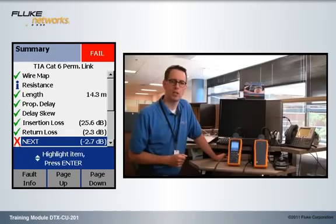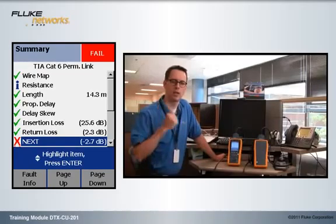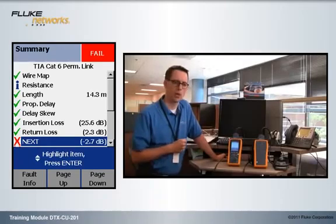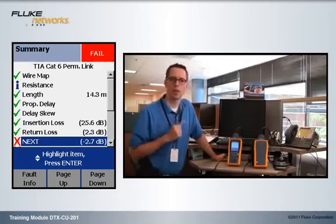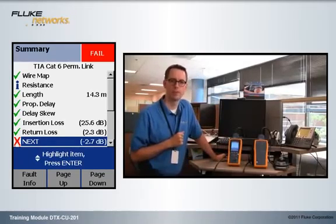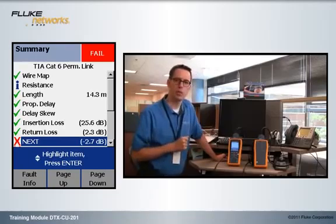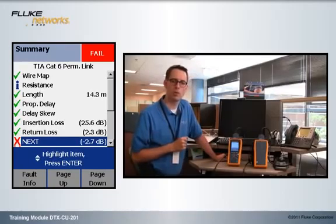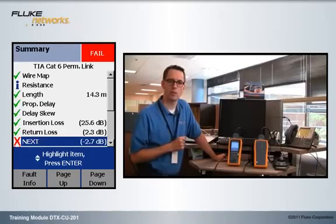You can follow along a lot easier by looking at the screen on your left-hand side there. When I press a button here, that screen will change too. So in this example here, we see that near-end crosstalk failed with a margin of minus 2.7 dB.